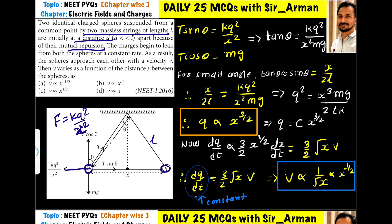The charge begins to leak from both spheres at a constant rate. As the charge reduces, the repulsive force decreases. When the repulsive force decreases, these two spheres move towards each other because the repulsion decreases. As a result, the spheres approach each other with velocity v.